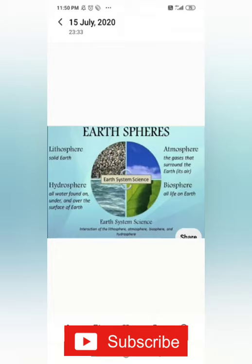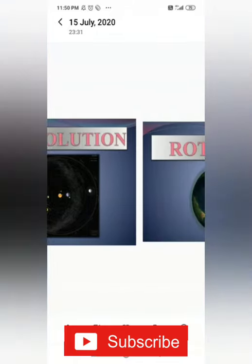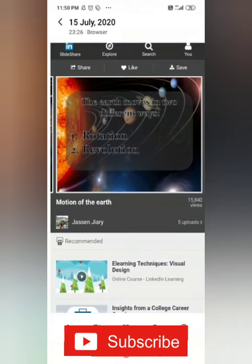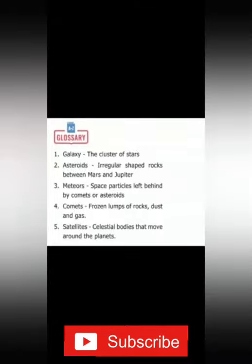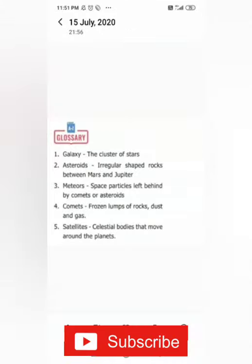Next we will move on to the glossary — the meanings of the vocabulary. Galaxy means a cluster of stars. Asteroids are irregular-shaped rocks found between Mars and Jupiter. Meteoroids are space particles left behind by comets or asteroids. Comets are frozen lumps of rocks, dust, and gas. Satellites are celestial bodies that move around the planets.